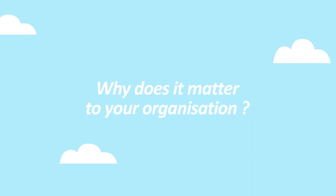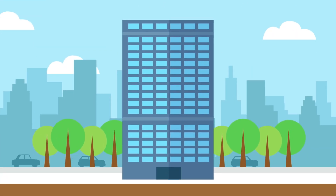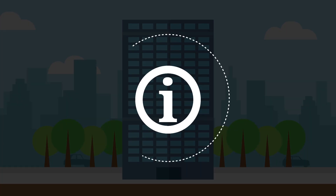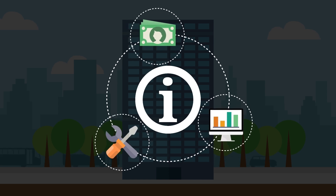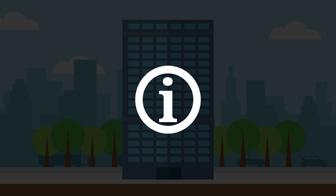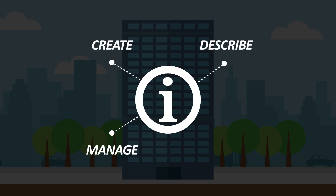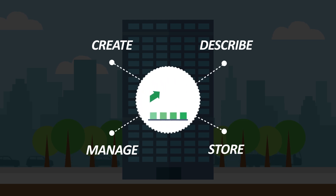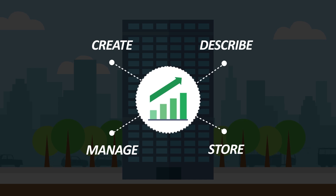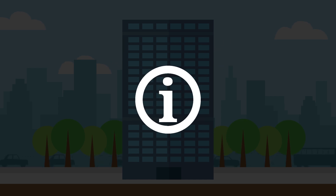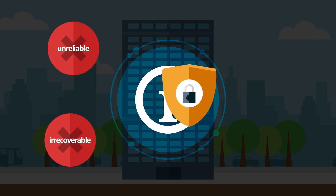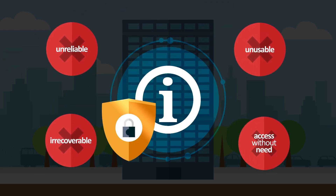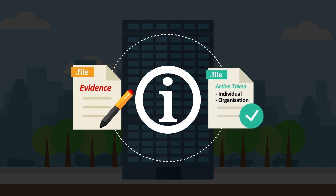Why does information matter to your organisation? Information matters because it's a strategic asset and an economic resource — it's as important as money, property and equipment. Without it, your organisation wouldn't be able to carry out its business. When information is accountably created, managed, described and stored, its potential value increases, enabling it to be shared more easily and used for other purposes in the future. Like any asset your organisation owns, information needs to be protected from any risks that will make it unreliable, irrecoverable, unusable or able to be accessed by those without need. Information also provides evidence of decisions and actions taken by you or your organisation.